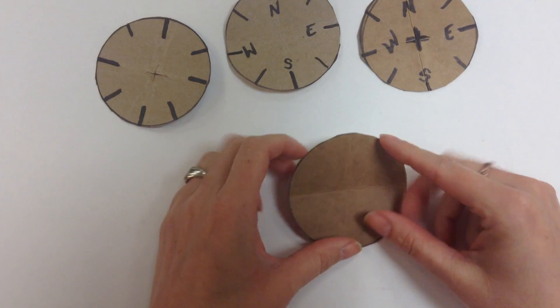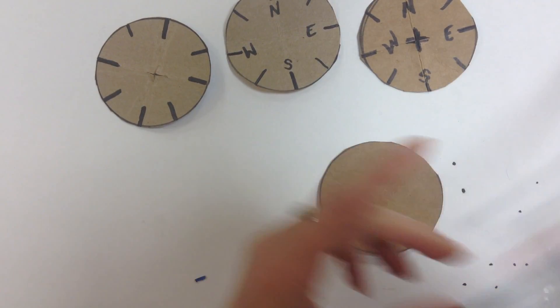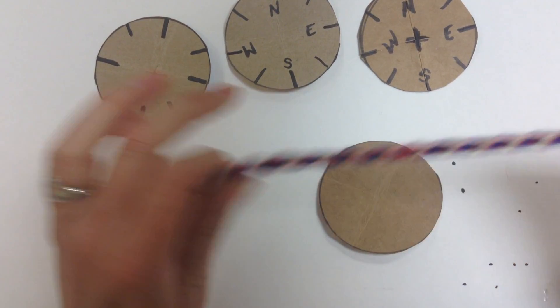I want to show you how to make your own kumihimo disc so that you can do your own weaving for a braided chain like this.